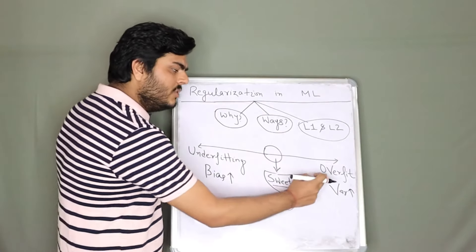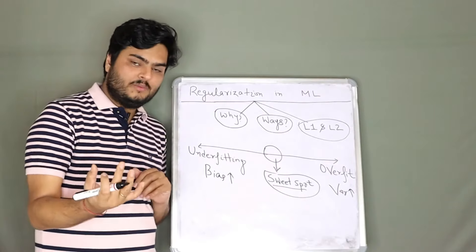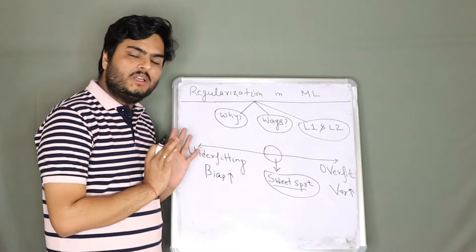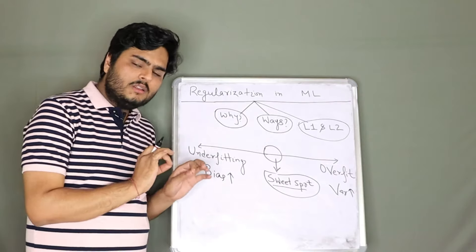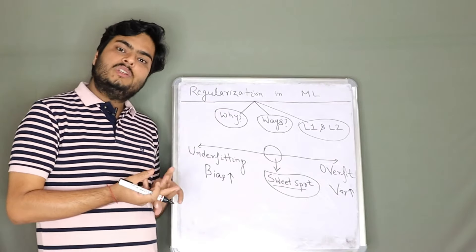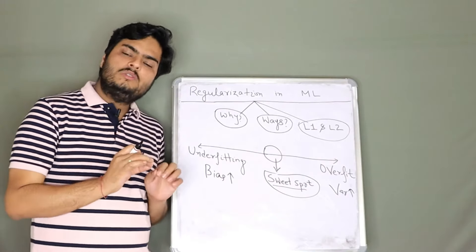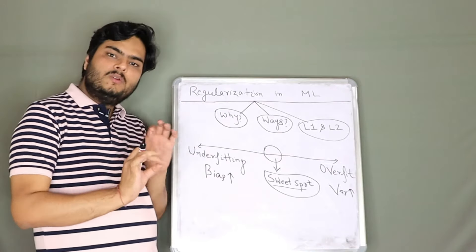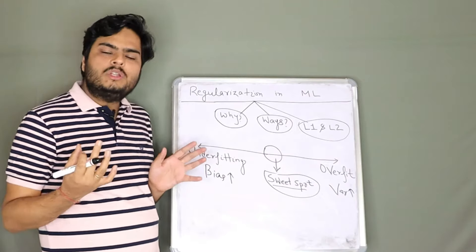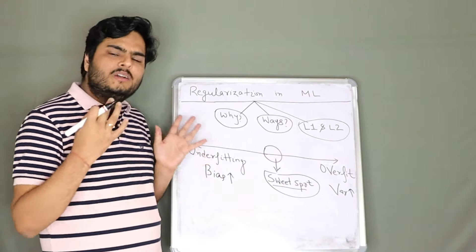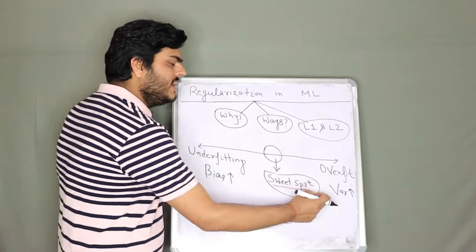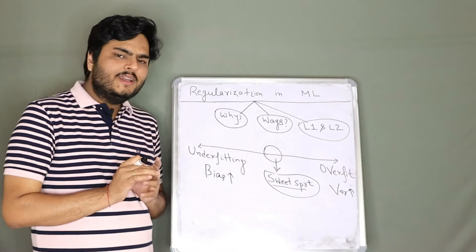What kind of models will have high variance? Models that are free to do whatever they want. For example, decision trees and plain neural networks — until you do some regularization, parameter tuning, or pruning, these are free models. They don't assume any form of the data. If you don't control the parameters, they will tend to give high variance.